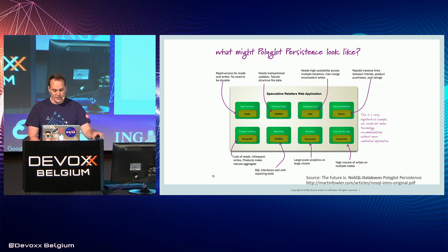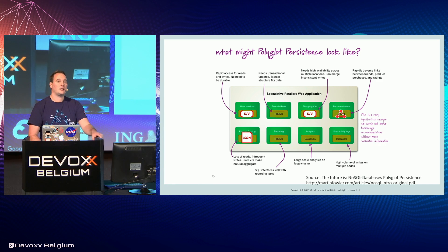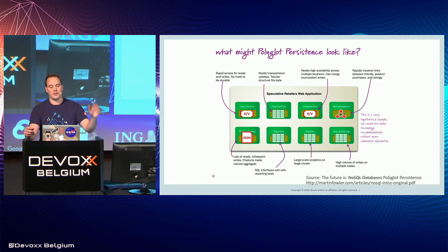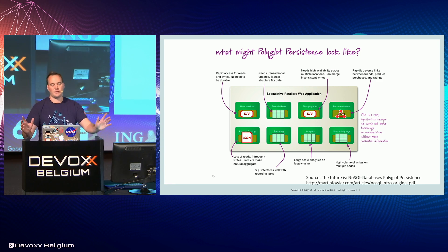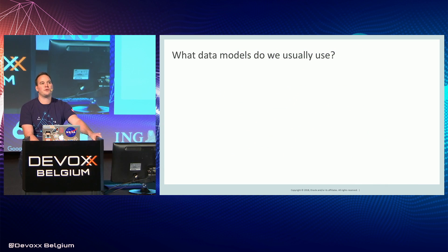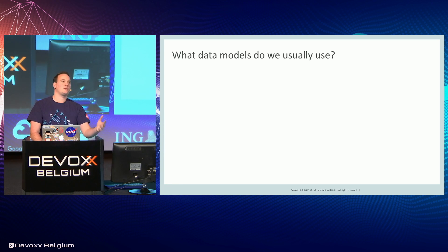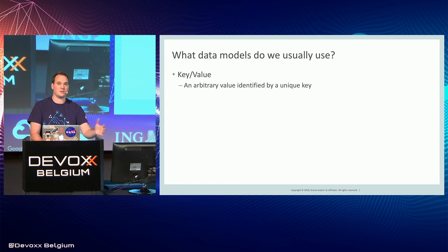In that picture, we have essentially two key-value stores, a JSON document store, a graph store, and something that looks tabular — not necessarily relational, though the relational database is there. Cassandra also looks tabular, or wide-column family as they used to call it. I want to focus on the four data models that cover 99% of use cases today. So it's key-value, which is an arbitrary value identified by a unique key — very simple.